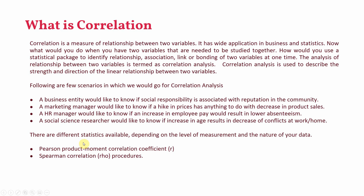There are different statistics available to test correlation. The two common ones are Pearson product-moment correlation (r) and Spearman correlation (rho). If your data is normally distributed and is on a scale level of measurement — interval or ratio scale — you go for Pearson product-moment correlation. But if your variables are on an ordinal scale, you should go for Spearman correlation.